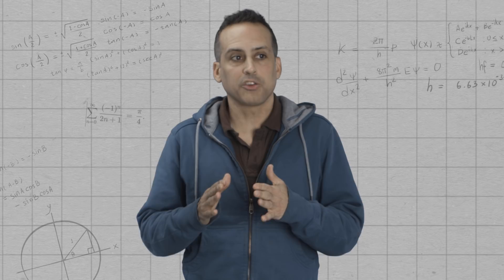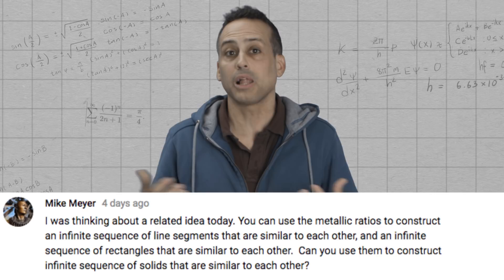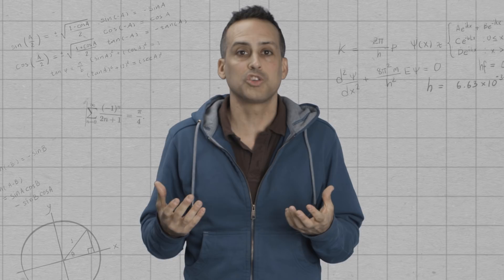Some of you also pointed out possible generalizations of the problem. So, for example, Mike Meyer asked, have we looked in three dimensions? Have we looked, I assume he means, at diagonal to edge length ratios in polyhedra? And I haven't. But that doesn't mean that you can't. You don't have to solve this problem first to try to go to 3D and generalize.